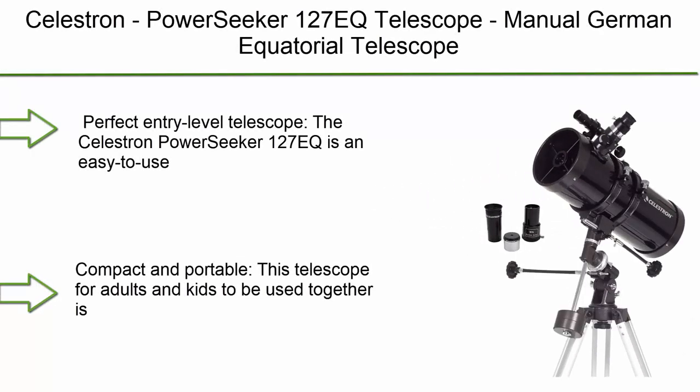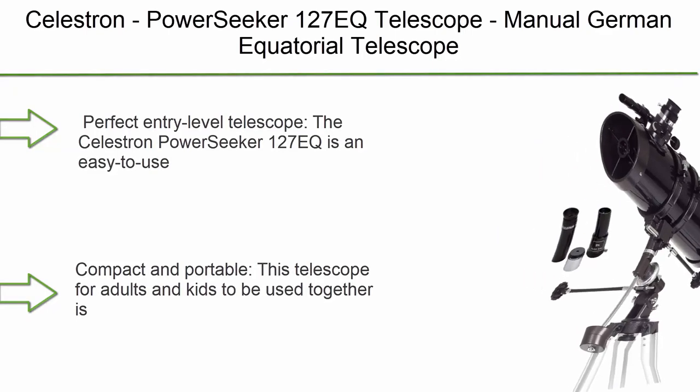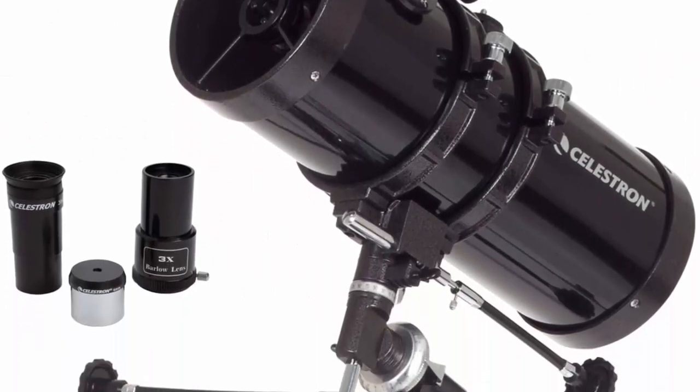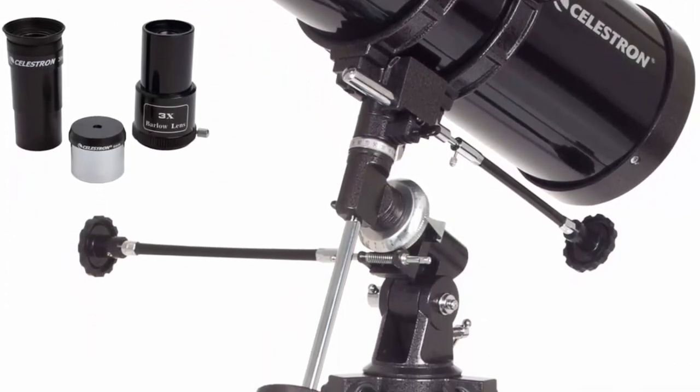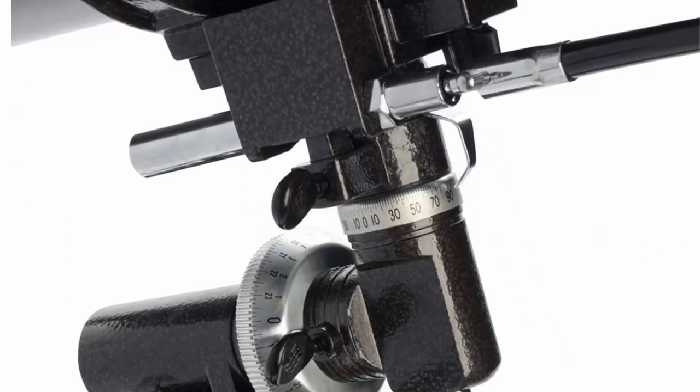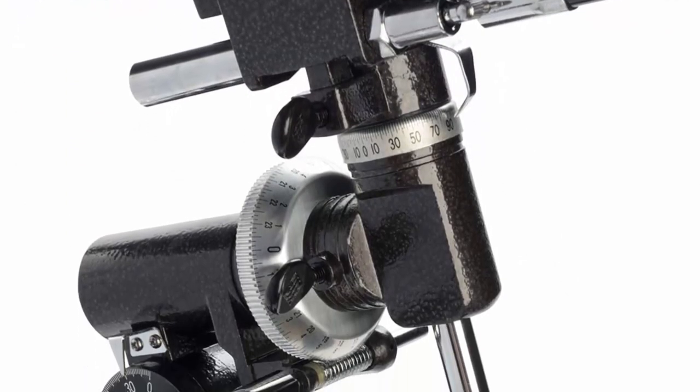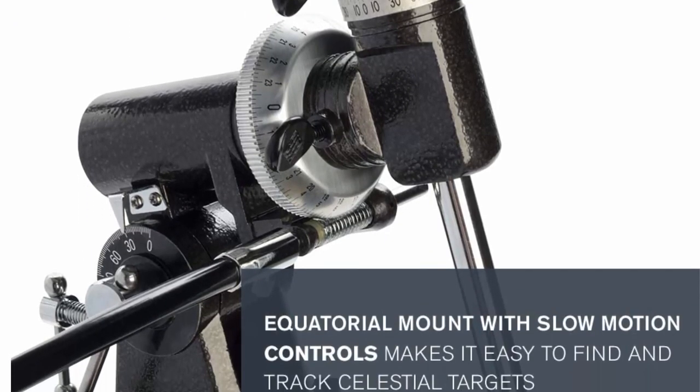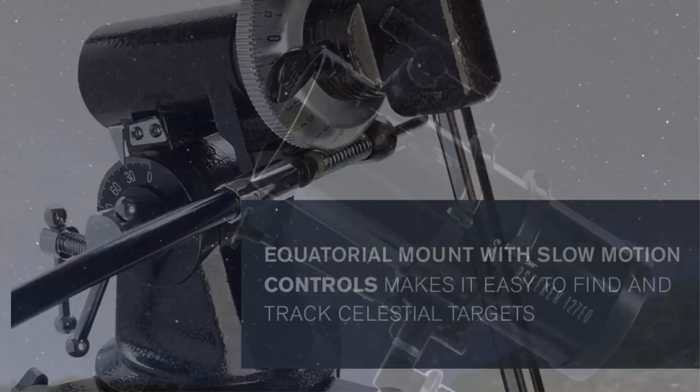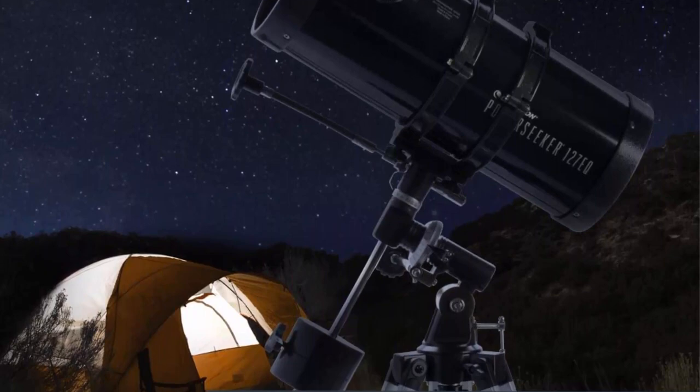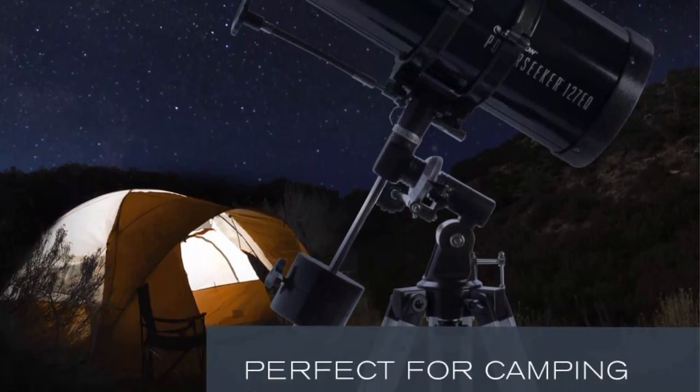Top 1. Celestron Power Seeker 127EQ Telescope. Manual German Equatorial Telescope for Beginners. Compact and Portable. Bonus Astronomy Software Package. 127mm Aperture. Perfect Entry Level Telescope. The Celestron Power Seeker 127EQ is an easy to use and powerful telescope. The Power Seeker series is designed to give the new telescope user the perfect combination of quality, value, features and power.